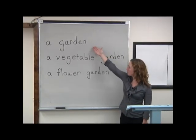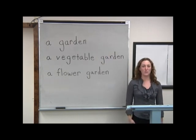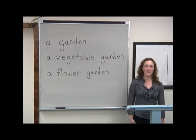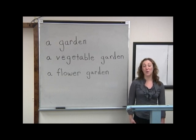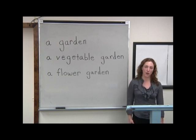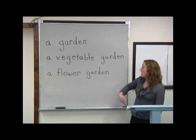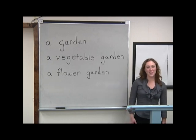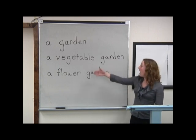A garden is a place where you grow plants. There are many types and sizes of gardens, and there are many ways to describe gardens. For example, sometimes gardens are described by what we plant in them.